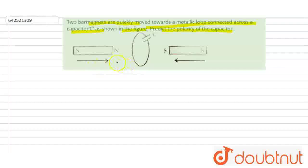So, if we move this bar magnet towards the capacitor, then the left side of this loop will act as a north pole. And since this is a south pole, then the right part of the loop will act as a south pole, so that they can oppose.